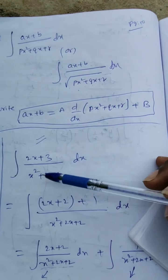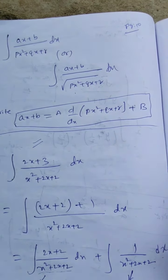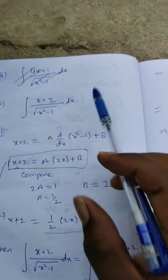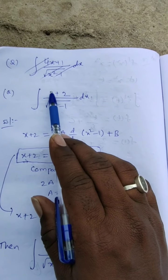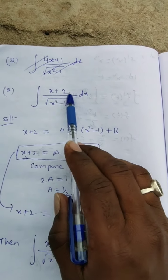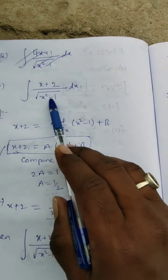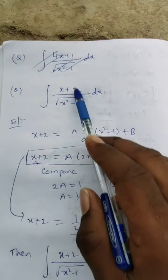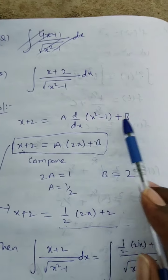So according to this, yesterday I explained the shortcut. Now I am explaining by method, in case you are not able to find the shortcut. Here, x + 2 is the linear part and under root of (x² - 1) is the quadratic part. So I can write x + 2 = a · d/dx(x² - 1) + b.